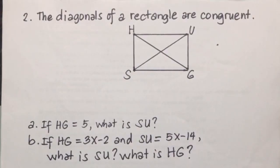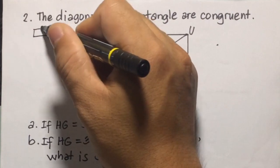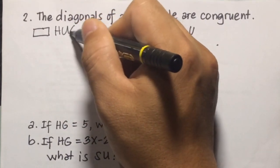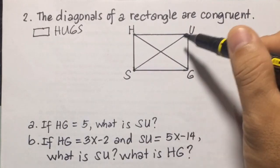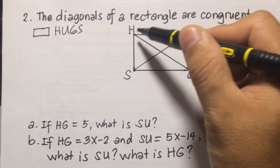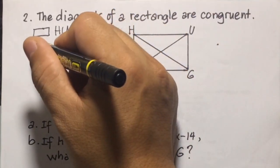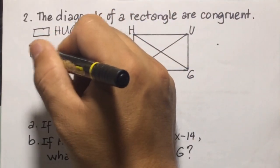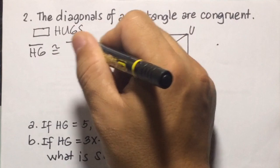Theorem number 2. The diagonals of a rectangle are congruent. So, we have rectangle HUGS with diagonal HG and SU. Now, this means that they are congruent. So, we can say that diagonal HG is congruent to diagonal SU.